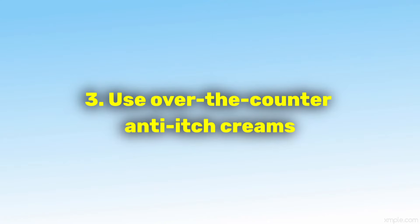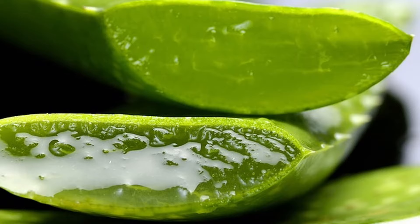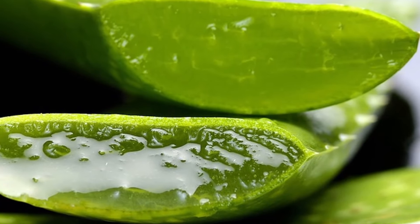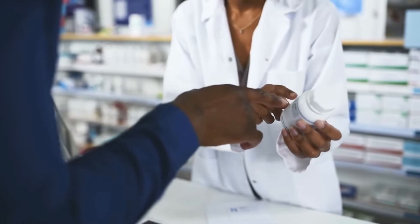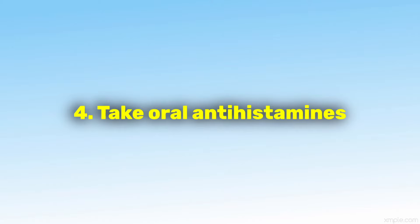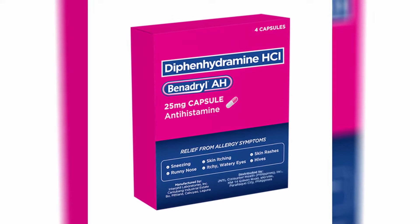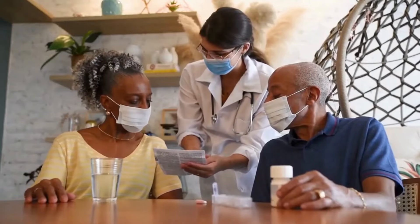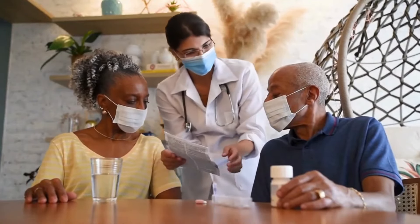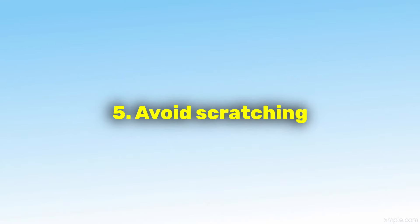Use over-the-counter anti-itch creams. Apply calamine lotion, hydrocortisone cream, or aloe vera gel to the affected area to relieve itching and inflammation, following the product instructions carefully. If itching is severe, you may consider taking an oral antihistamine, such as diphenhydramine (Benadryl) or loratadine (Claritin), to reduce itching and swelling. Consult a healthcare provider or pharmacist for appropriate dosage and recommendations.